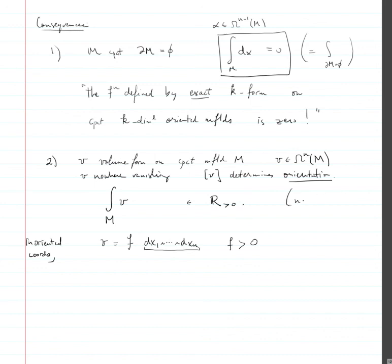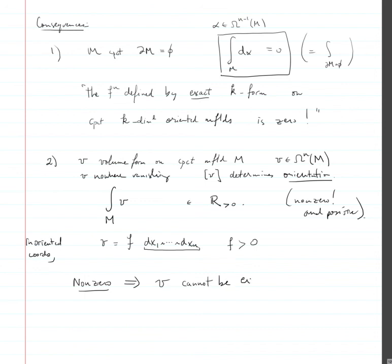So this means the integral is necessarily positive, and in particular non-zero. Because this is non-zero, it implies that v cannot be exact — if it were exact, then the integral would be zero.